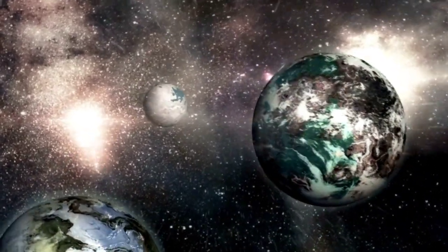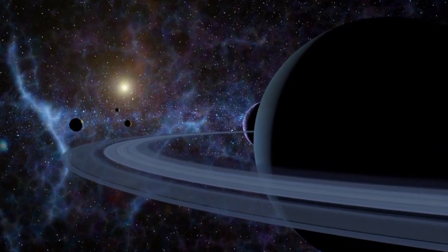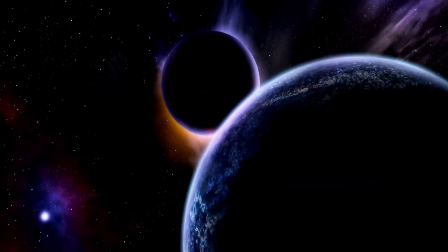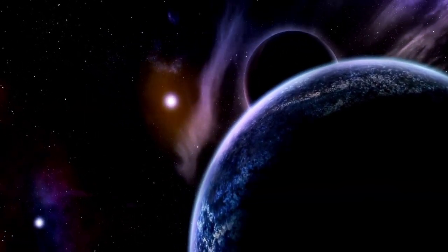The Kuiper belt, a region filled with icy bodies and dwarf planets like Pluto, is home to numerous objects that could provide valuable information about the formation and evolution of our solar system.